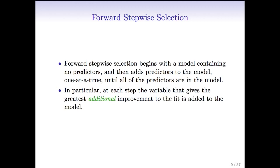This sounds like best subset selection, but there's a really major difference. At each step, we're not looking at every single possible model that contains K predictors. We're just looking at the models that contain the K minus 1 predictors we already chose in the previous step, plus one more. So at the Kth step, we're looking at a much more restricted set of models. In particular, at each step we just choose the variable that gives the biggest improvement to the model we just had.